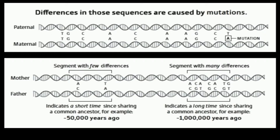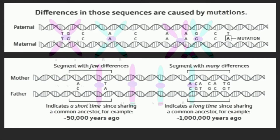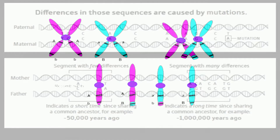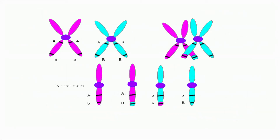Your parents have chromosome pairs — one from their mother and one from their father. But before they hand over their version of their chromosomes to you in the egg or sperm, they recombine the chromosomes they received, on average about 70 times per generation. This is chromosomal crossover.